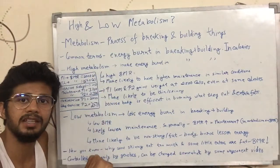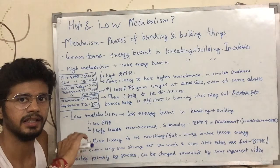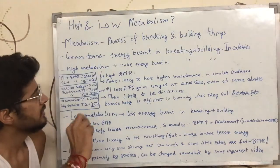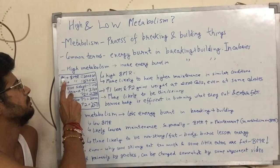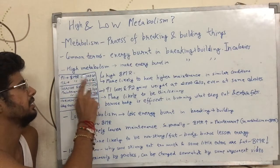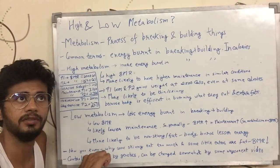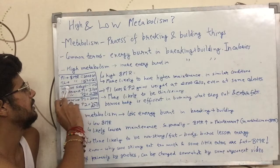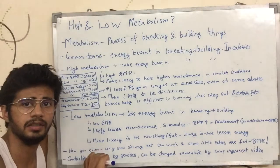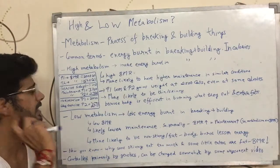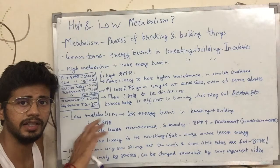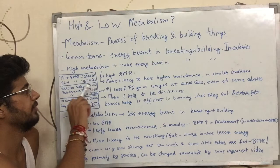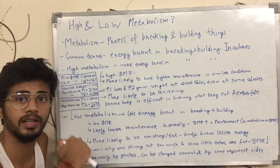A person having a higher BMR is more likely to have higher maintenance calories than a person having a lower BMR, given that they are both in the same conditions. For example, suppose there are two people — P1 and P2. P1 has a BMR of 2000 calories, meaning P1 burns 2000 calories lying in bed all day. P2 has a BMR of 1500 calories. If they both do decent-intensity exercise for 5 days a week with the same daily lifestyle, the maintenance of P1 is 3100 calories — 2000 multiplied by 1.55. If you don't understand this, check my videos on how to calculate maintenance calories.